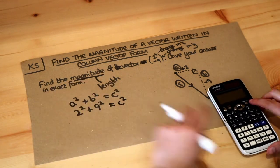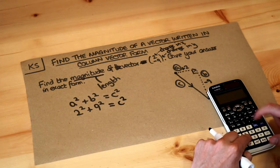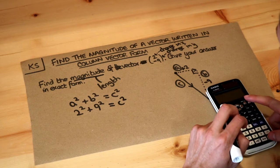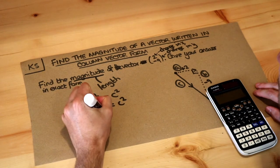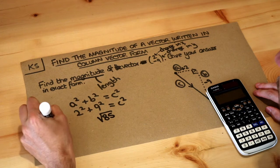So then if we do the square root of 2 squared plus 9 squared, that gives us root 85. So that is the magnitude of the vector.